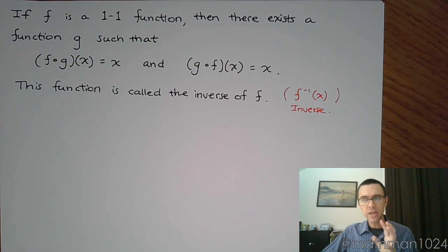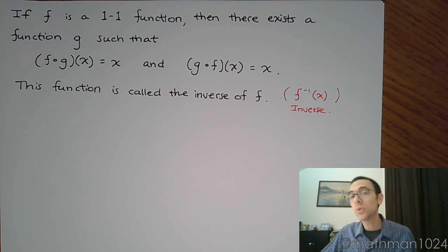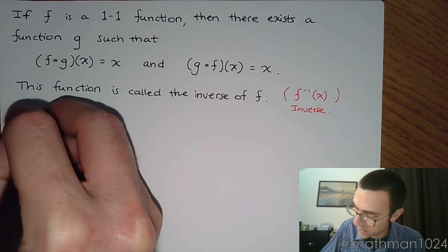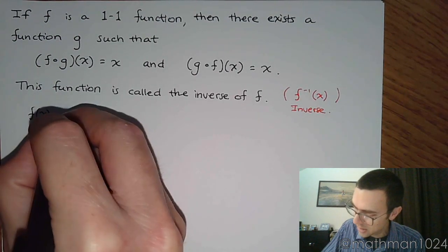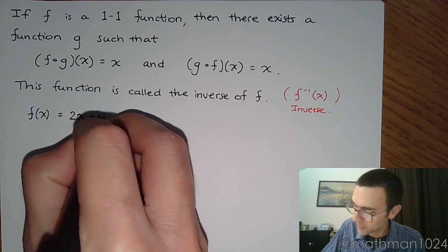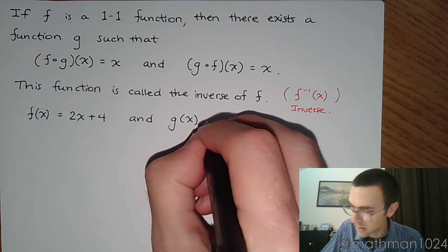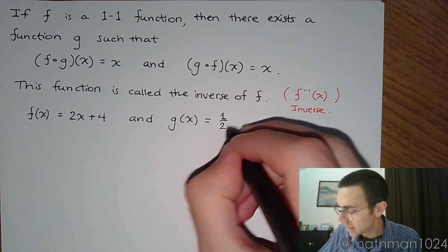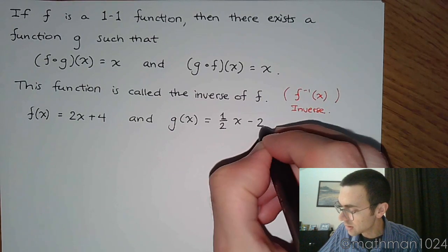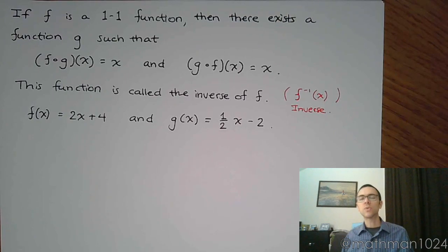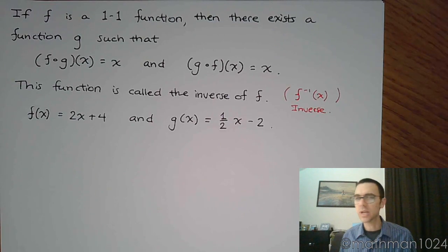We're going to do an example here of a function and something that we're proposing is the inverse. I'm going to say that f of x is equal to 2x plus 4, and g of x is equal to one half x minus 2. And what I want us to do is verify that these guys are inverses. You're going to see problems like this show up in the homework. It'll say, here are two functions.